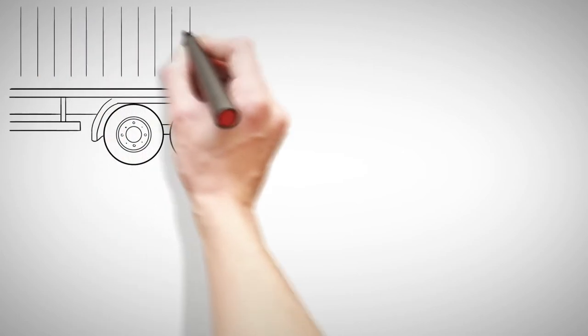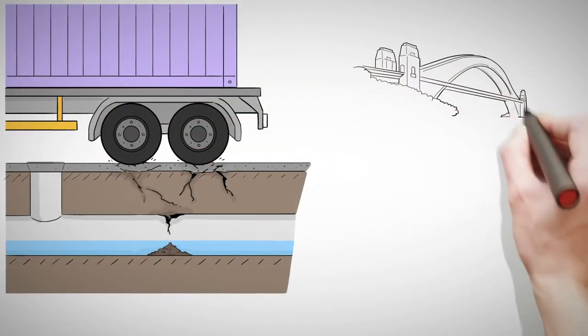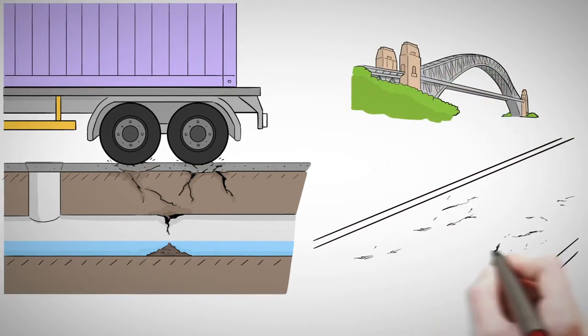Why? High axle weights damage road surfaces and the stormwater pipes that lay underneath. High axle weights also damage bridges and other road structures.